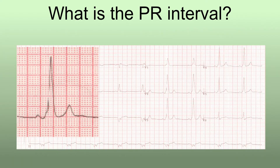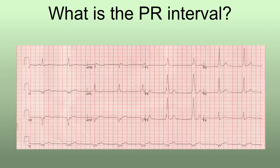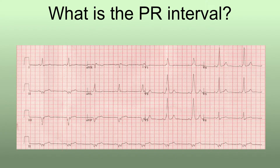Looking at the 12-lead ECG, in V1 the whole of the QRS is above the baseline, representing an M shape — a right bundle branch type morphology. In this case the pathway is feeding into the left bundle, i.e. on the left side of the heart, causing a right bundle type picture on the ECG. The left bundle is activated before the right bundle.